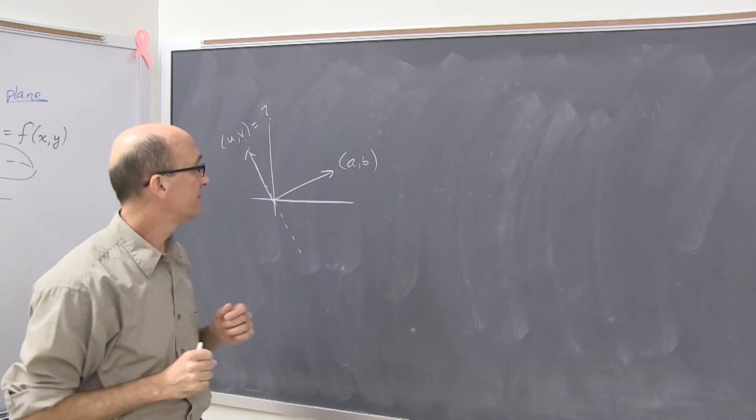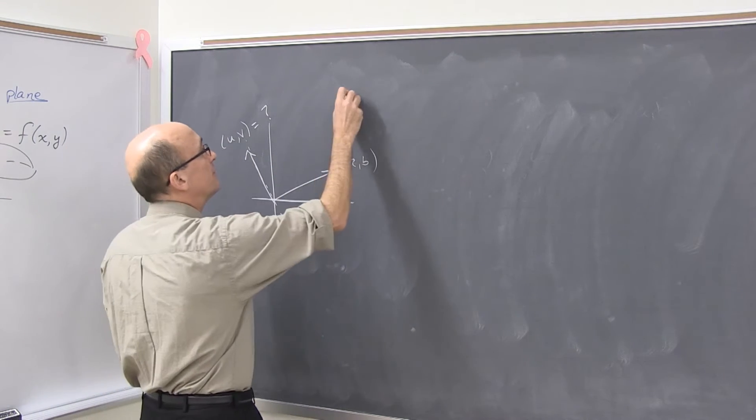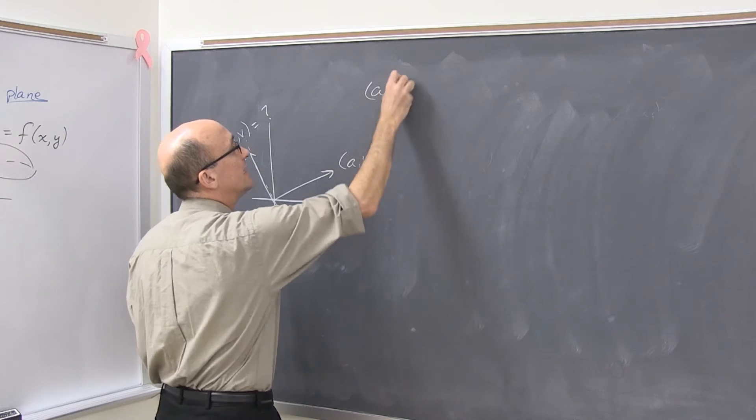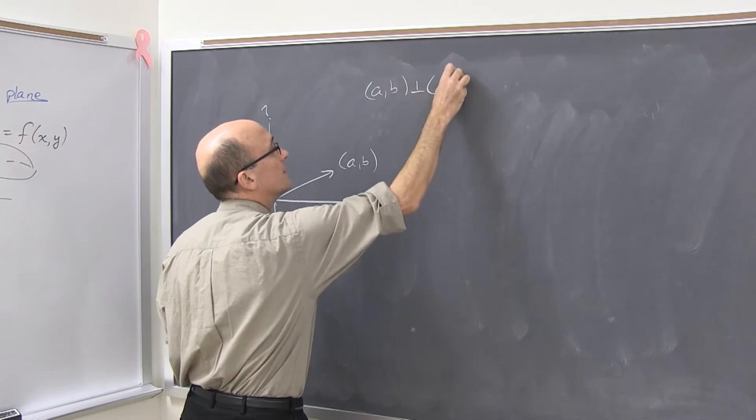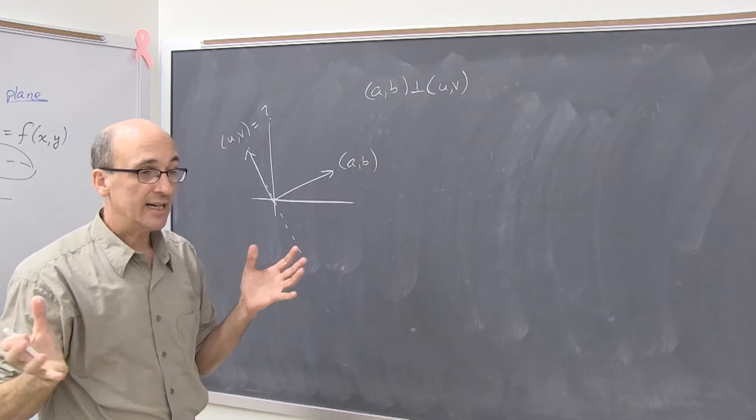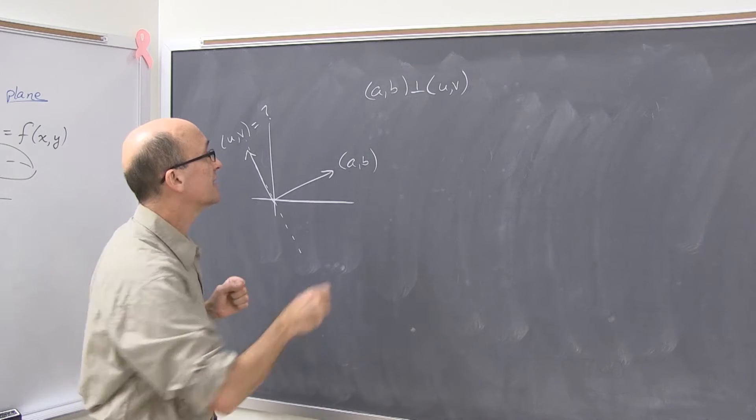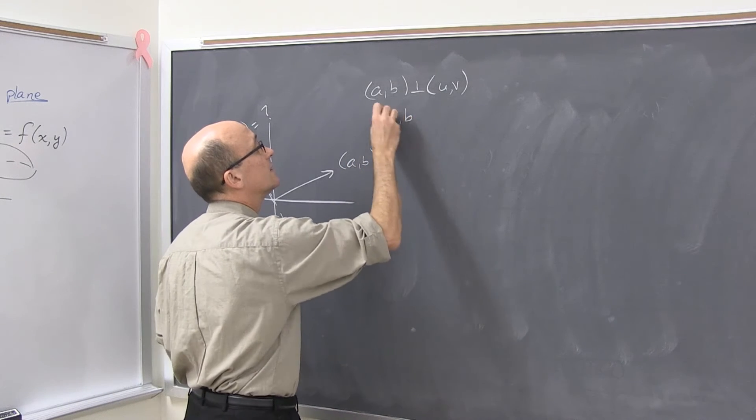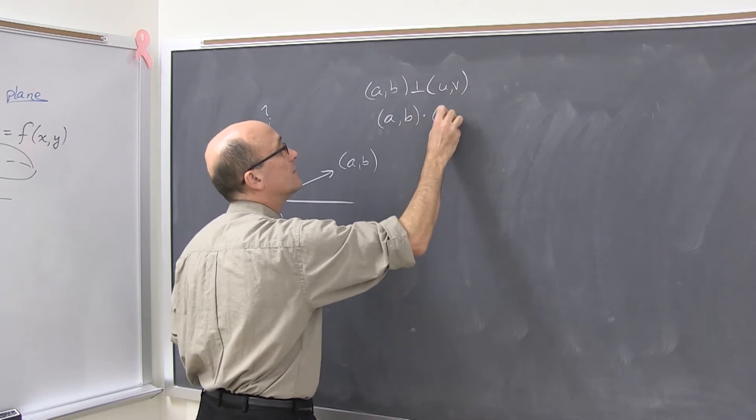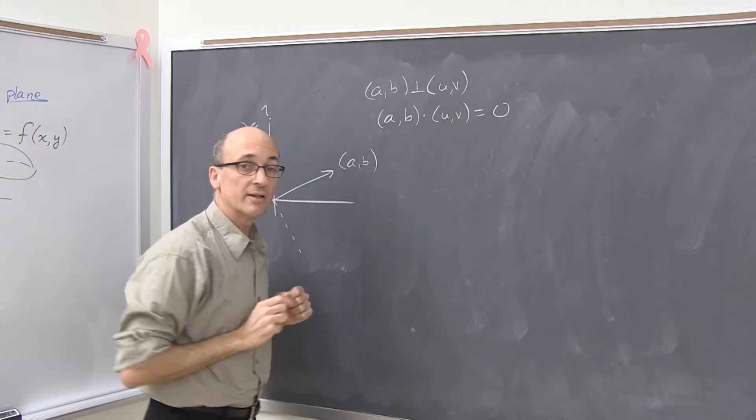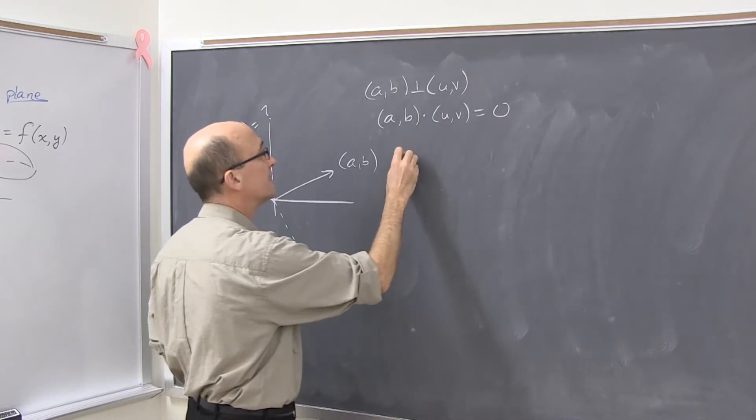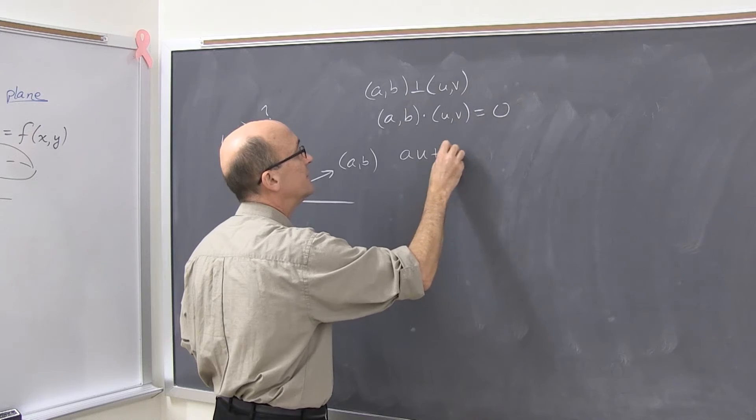Well, the solution is very straightforward. We write down what we want. We want (a, b) perpendicular to (u, v). We have an algebra tool for that. The dot product tells us when two vectors are perpendicular. The two vectors are perpendicular when their dot product is zero. That gives us an equation to solve: a·u + b·v.